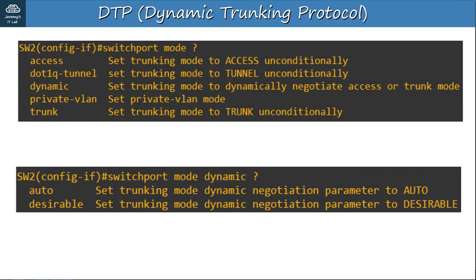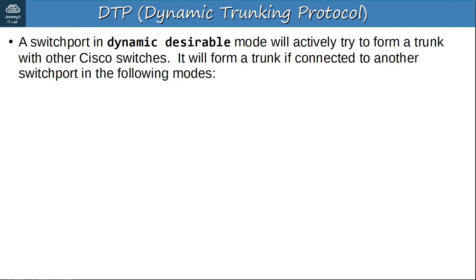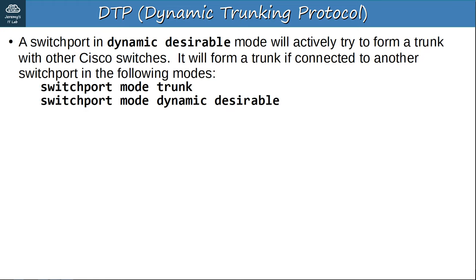Entering 'dynamic ?' shows two options: auto and desirable. The description says 'set trunking mode dynamic negotiation parameter to auto or desirable.' A switchport in dynamic desirable mode will actively try to form a trunk with other Cisco switches. It will form a trunk if connected to another switchport in trunk mode, dynamic desirable mode, or dynamic auto mode.